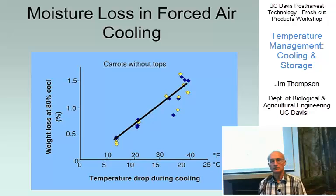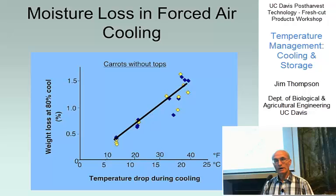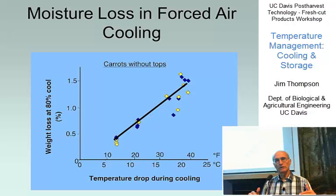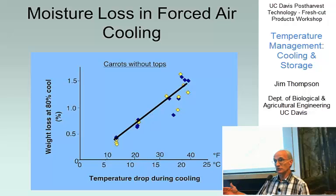We do lose moisture in forced air cooling. This is a graph of some experiments we did with carrots many years ago. The amount of moisture lost varied from about half a percent to one and a half percent of the weight of the product. The amount of water lost depends on the total temperature drop in the cooling operation — that's the only factor that influences it. Those blue and yellow dots represent high-speed versus low-speed cooling: half a CFM per pound versus two CFM per pound, and you can't see a difference around that line.